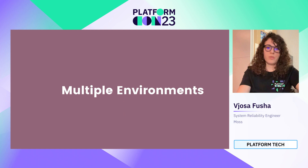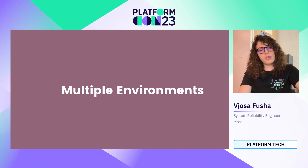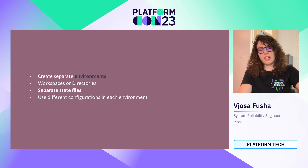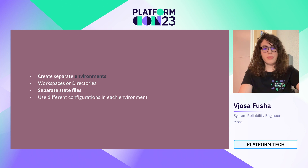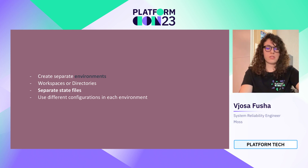Now let's continue talking about defining environments for our infrastructure — what options do we have and which one we chose as a team considering the consequences. To manage multiple environments, it's important to organize the Terraform code in a structured and maintainable way. There are two primary methods to separate between environments: directories and workspaces. Directories involve organizing your Terraform configuration files into separate directories for each environment — for example, staging, production, or development. Each environment directory contains its own Terraform code, including configuration files, modules, state files, etc.